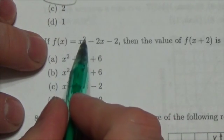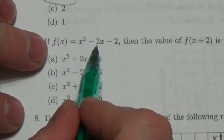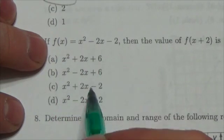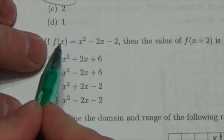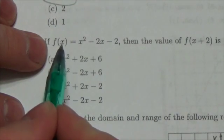subtract 2 times the independent variable, subtract 2. And whatever shows up inside the parentheses here, that is the independent variable.